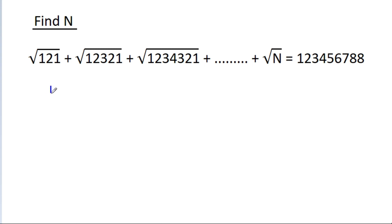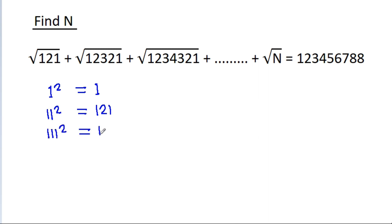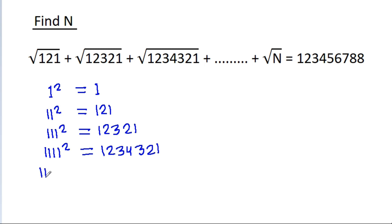So, 1 squared is equal to 1. 11 squared is equal to 121. 31 squared is equal to 12321. 41 squared is equal to 1234321, and 51 squared is equal to 123454321, and so on.